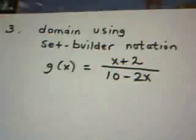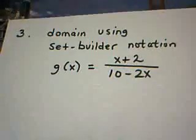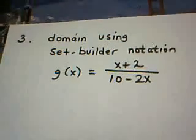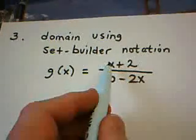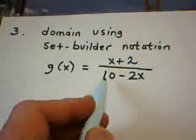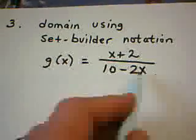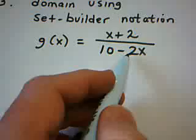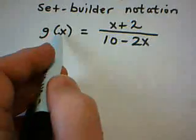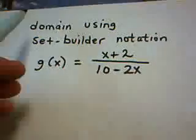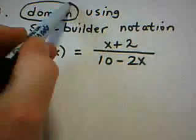Now, my next question, question number 3, is a very similar question. Notice that I have a rational function. x plus 2 is a polynomial. 10 minus 2x is a polynomial. The ratio of two polynomials as a function is called rational.